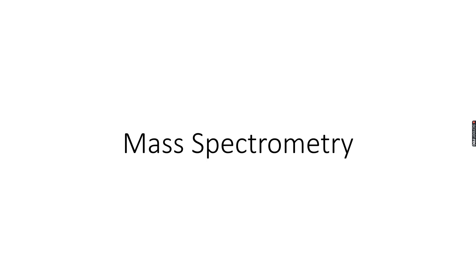Welcome to A-level Chemistry. Our topic for today is mass spectrometry. We've already done one analytical technique which is NMR spectroscopy, and this is another analytical technique in which we use something called the mass-to-charge ratio to identify the compound we are trying to analyze.